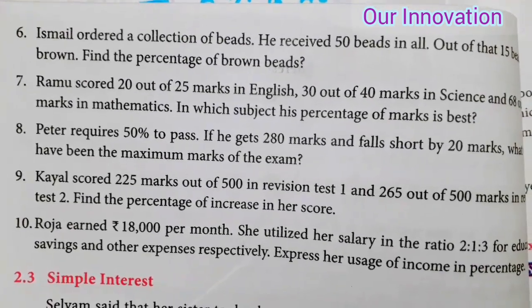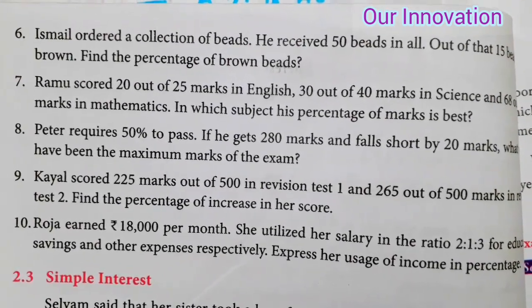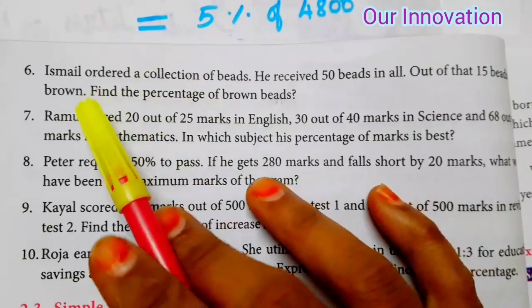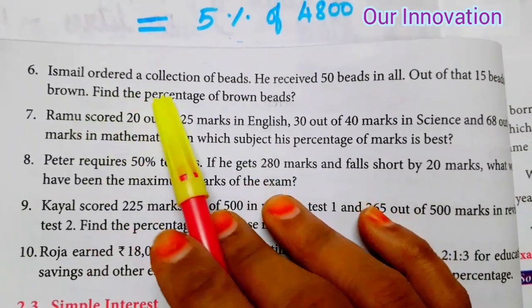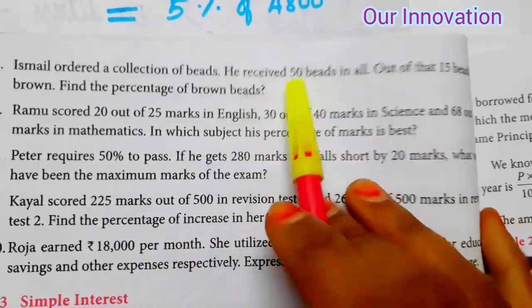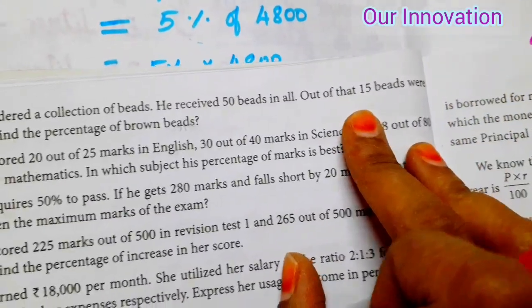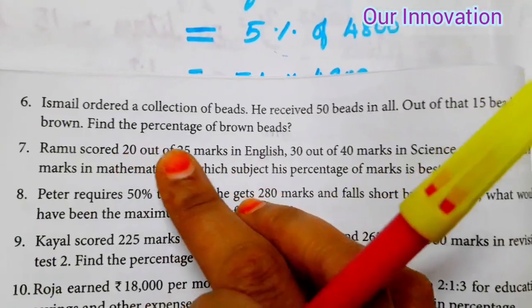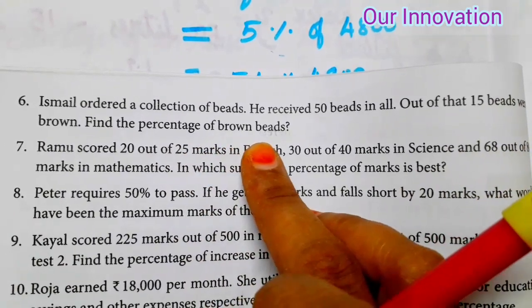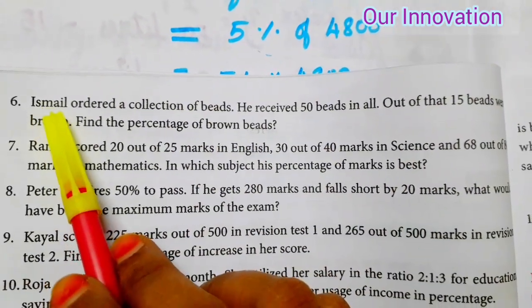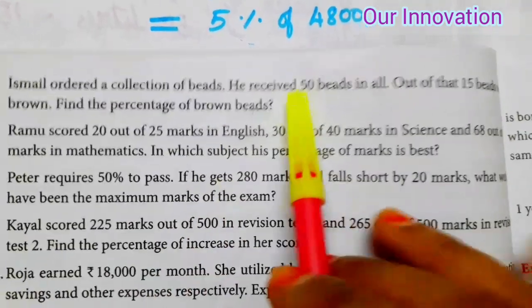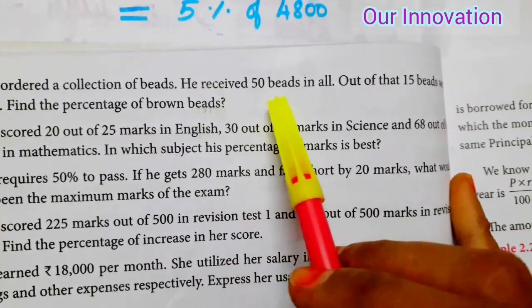Hi my dear students, welcome back to Our Innovation. In this video, we continue with the 6th problem from exercise 2.3. Ismail ordered a collection of beads. He received 50 beads in all, out of that 15 beads were brown. Find the percentage of brown beads.